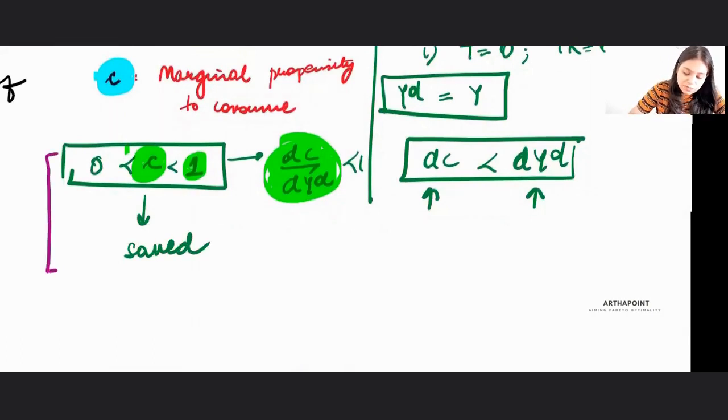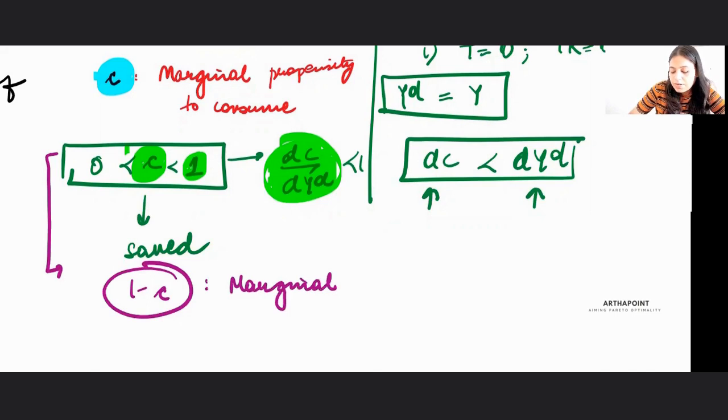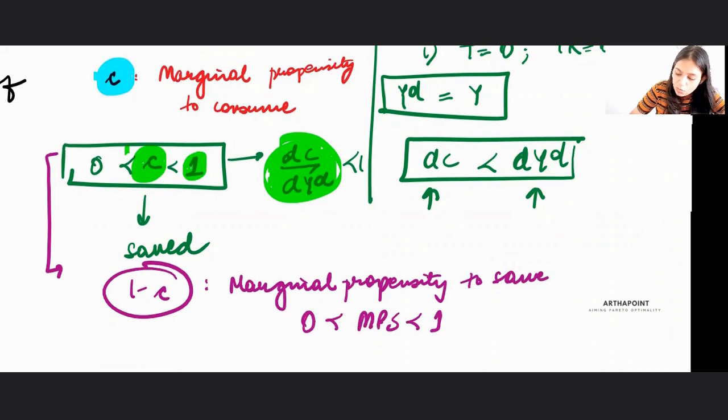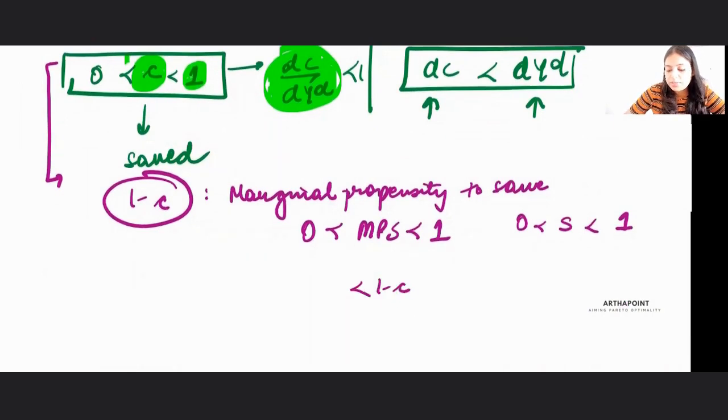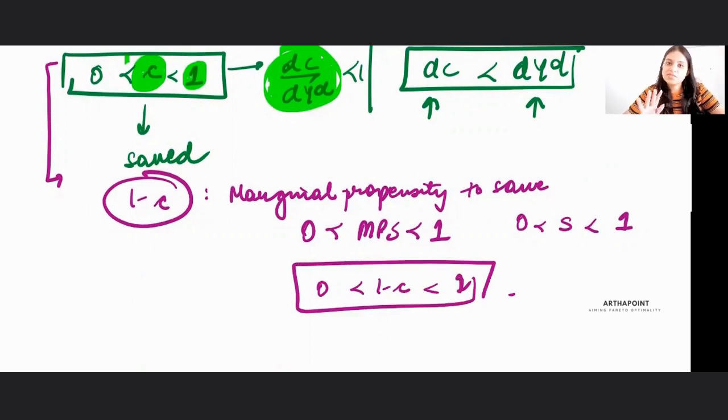So corresponding to this, we have 1 minus c and this is the marginal propensity to save. And this is also between 0 and 1. It can either be represented by a small s or you can represent it by 1 minus c also. Either of this is fine.